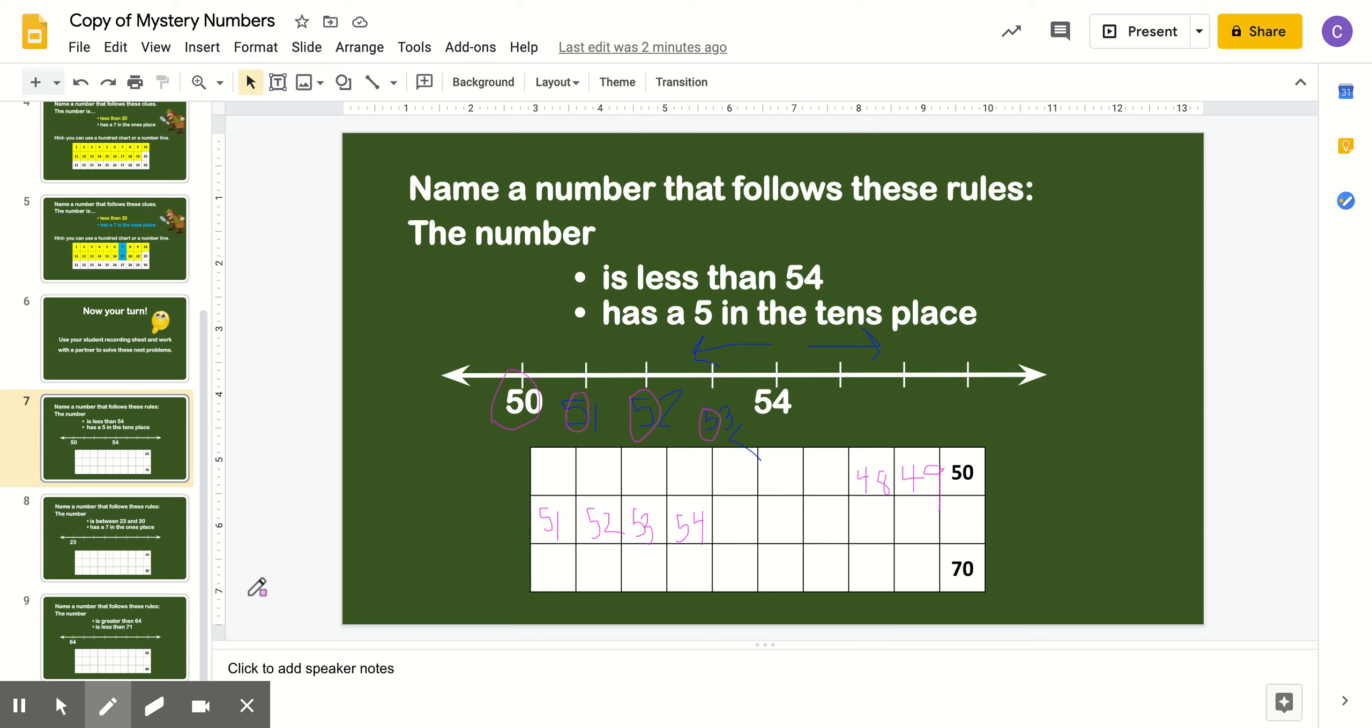So if we look at the tens place, it says these numbers have a 5 in the tens place. Do you think 48 and 49 have a 5 in their tens place? No, they don't, right? So I'm going to cross these out. It can't be 48 or 49. Now let's look at 50, 51, 52, and 53. Do they have a 5 in their tens place? Right. So I'm going to circle these numbers. I'm not going to circle 54 because the number is less than 54. So I'm going to cross this out as well.